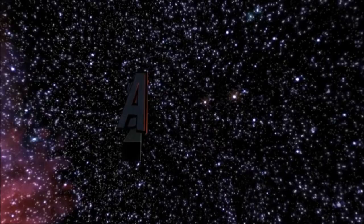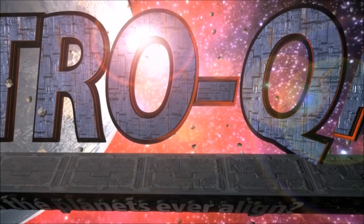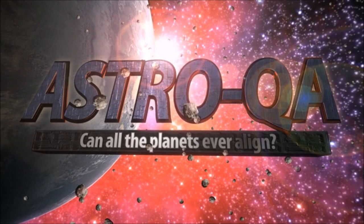There are a total 8 planets in our solar system orbiting around the sun. But will there ever be a moment when all these 8 planets line up in the same direction of sun?